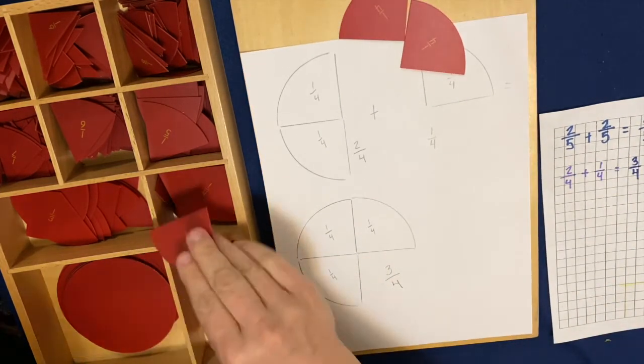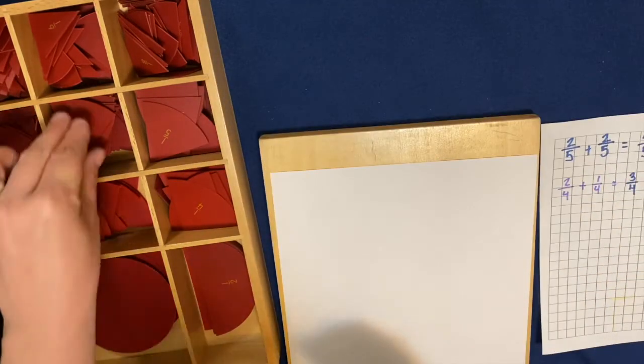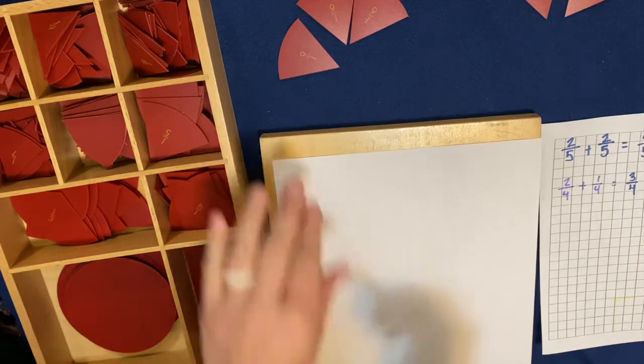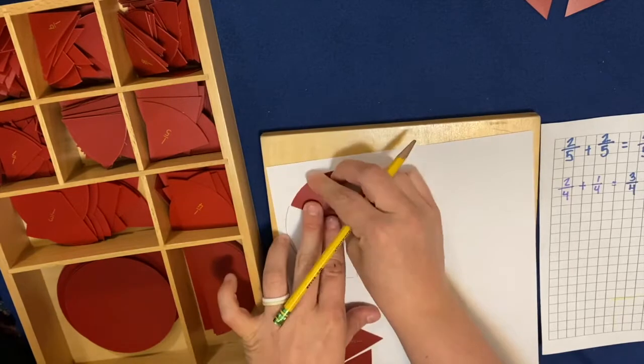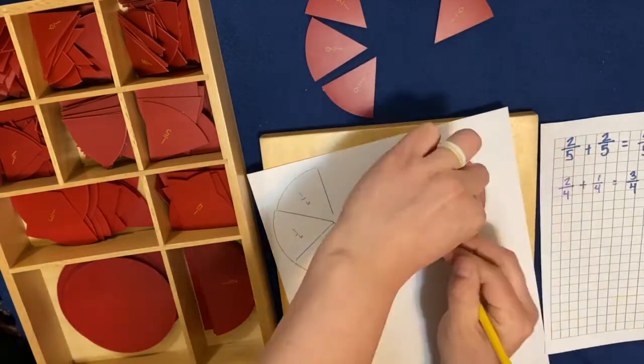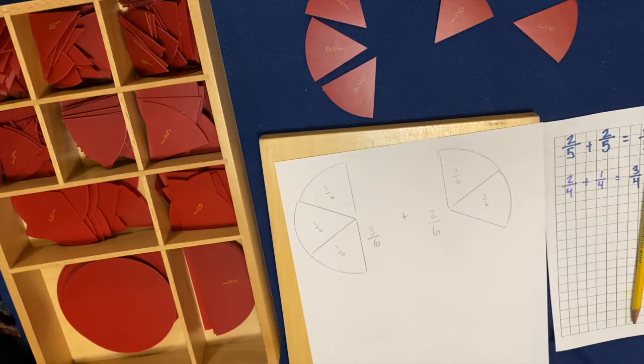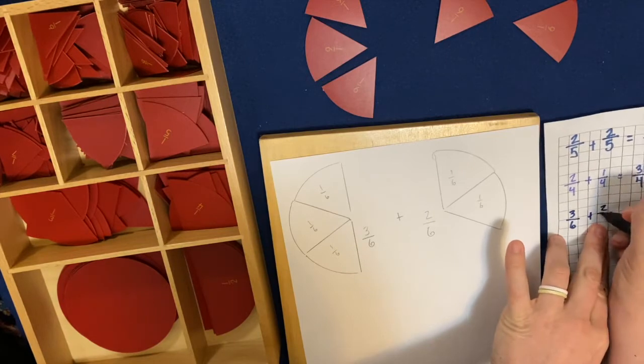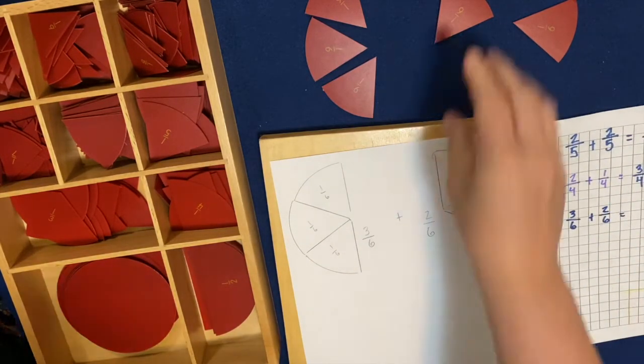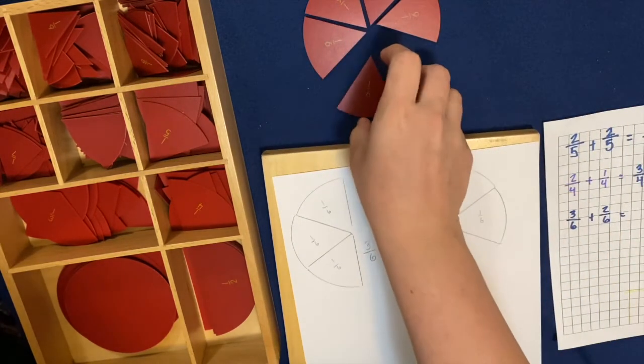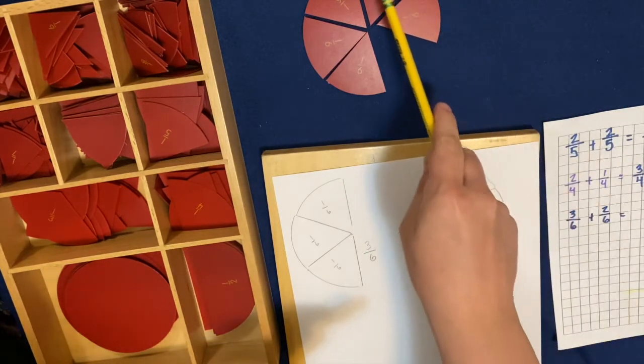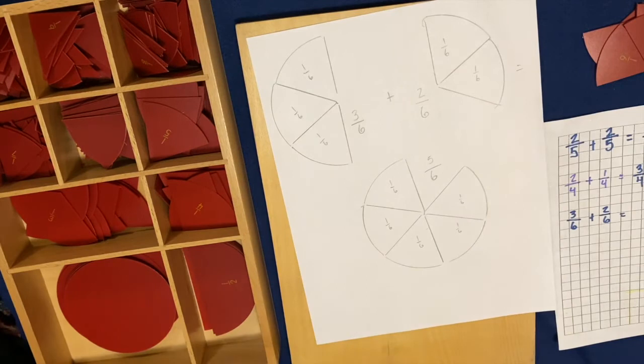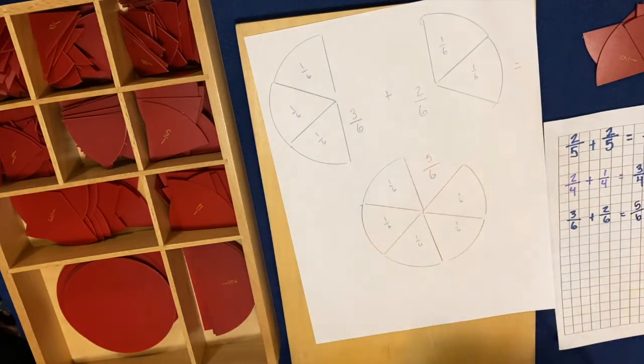Cool. Let's do one more addition problem, and then we'll move on to subtraction. This time we'll do something that's a little bit smaller, three-sixths plus two-sixths. So that says three-sixths plus two-sixths. And I'm going to write it down in numbers over here. Three-sixths plus two-sixths equals. So when we push all these together, how many sixths do we have? One, two, three, four, five. Five-sixths. So equals five-sixths.